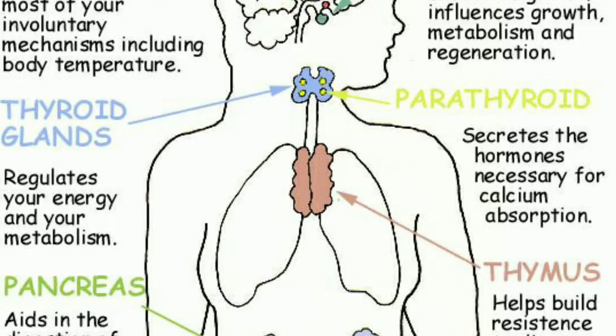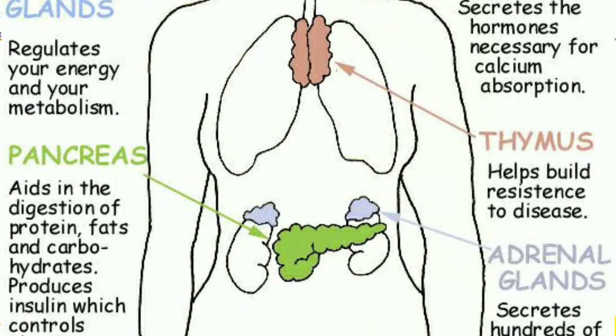The third is the pineal gland, which manages your sleep cycles by releasing melatonin, a hormone that causes you to feel sleepy. The fourth is the thyroid gland, a butterfly-shaped gland in the front of your neck responsible for your metabolism — that is, how your body uses energy. The fifth is the parathyroid gland, also located in the front of your neck, which is important for maintaining control of calcium levels in your bones and blood.